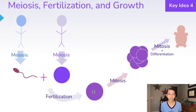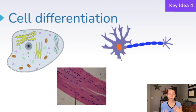Mitosis will continue until the cells start to differentiate and become all the different important parts of the growing embryo. Differentiation is how we get so many different types of cells from the same DNA. Even though we have the same DNA in every single one of our cells, different parts of that DNA are turned on or off in order to produce the proteins to make the differences in all of our cells.